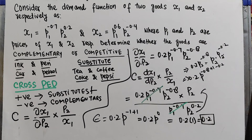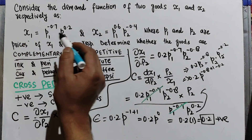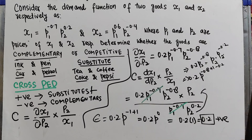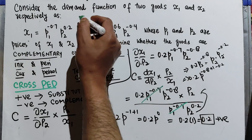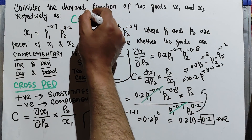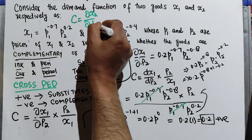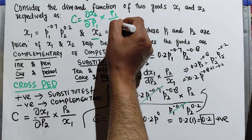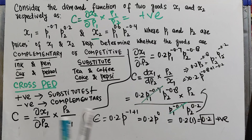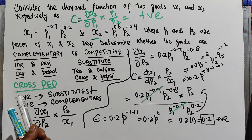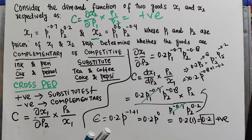The cross-price elasticity of demand came out to be positive, so x1 and x2 are competitive goods. You can check the same for good x2 — the cross-price elasticity of x2 with respect to p1 will also come out positive. Since the cross-price elasticity is positive, the two goods are competitive goods, or substitutes of each other.